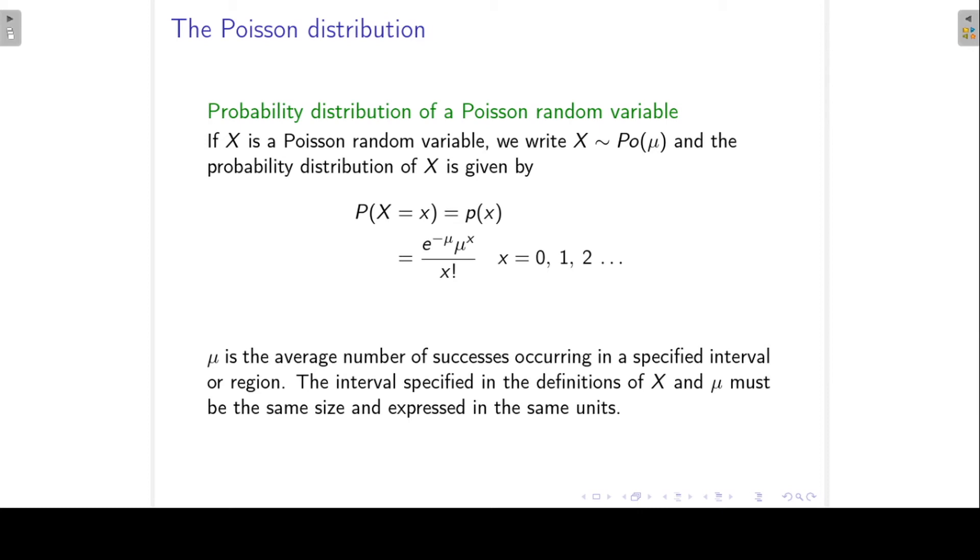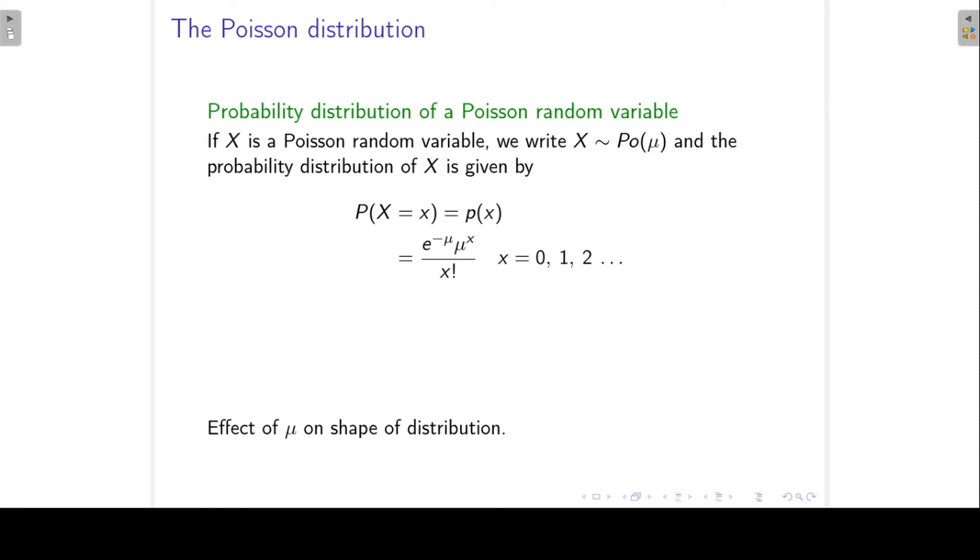We defined x as the number of accidents in a 24-hour period or in a 24-hour day. Therefore, mu should give us the average number of accidents in a 24-hour day.